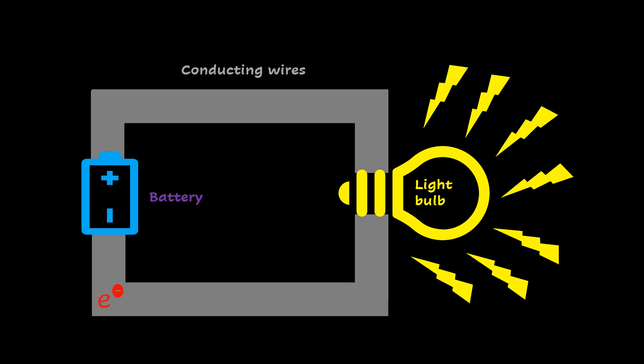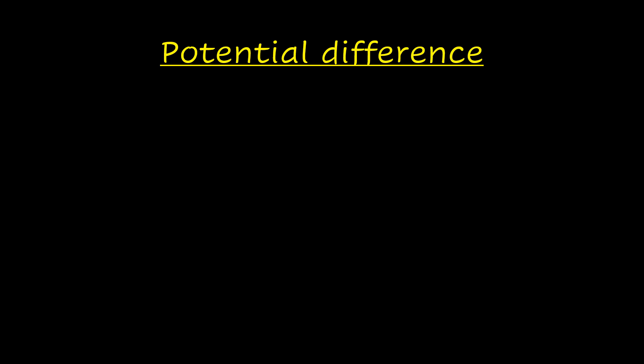The battery is flat when all its stored chemical energy has been converted into electrical energy to power the light bulb. A battery has the potential to drive charge around a complete circuit. The battery has potential energy that can be converted into electrical energy by doing work on the charge in the circuit to make it move. Work is a measure of energy transfer that occurs when an object is moved over a distance by an external force — the battery transfers energy to the charges, which are moved over a certain distance in the circuit.